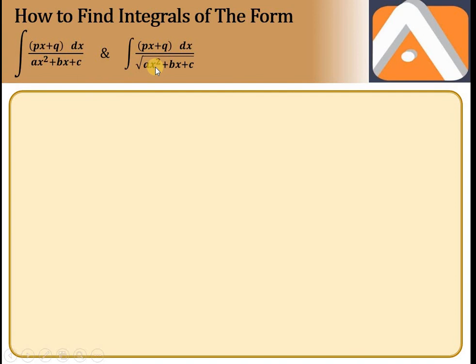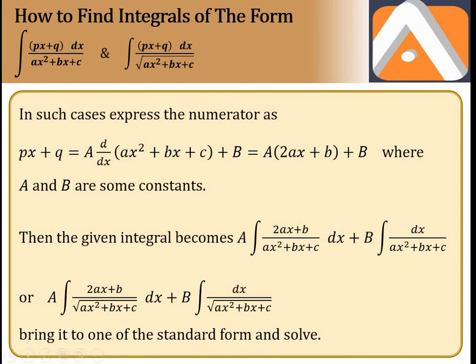What do we need to do? We need to do a substitution — this is the basic question from 10th class, completely based on completing the square you studied in 10th class. In this case, we need to split the integrand into two parts — either with a root or without a root, but the rest of the procedure is the same.